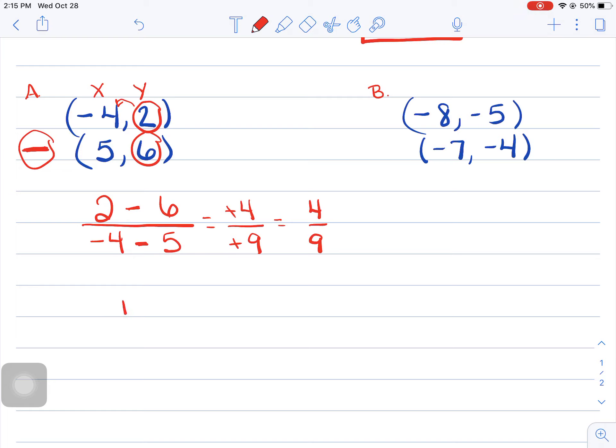I end up with 4 ninths. So my answer will be m equals 4 ninths. Every time I rise up 4, I run 9. That's what that means. All right, let's try B.